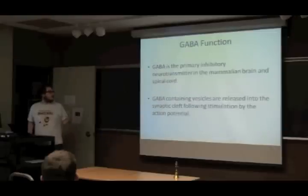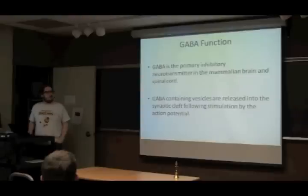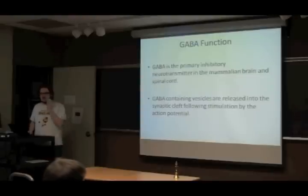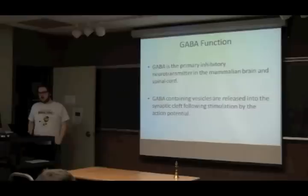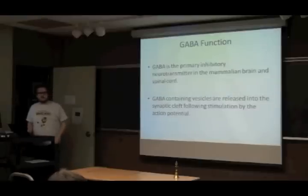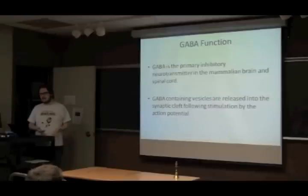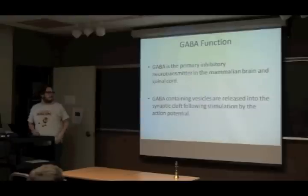GABA is the primary inhibitory neurotransmitter in the mammalian brain and spinal cord — that's the central nervous system. So it's the primary chemical that tells neurons not to fire; it makes them less likely to fire.